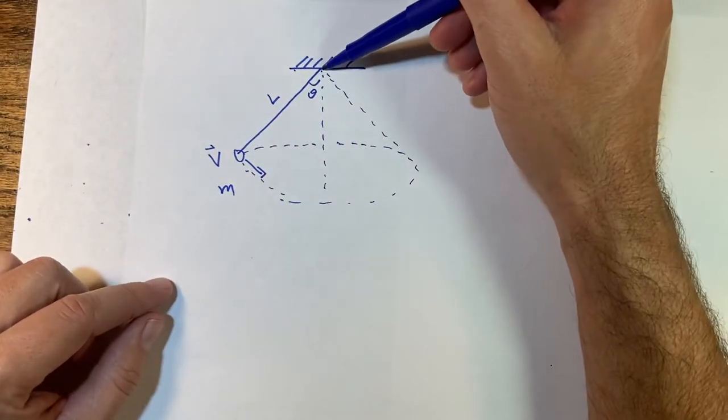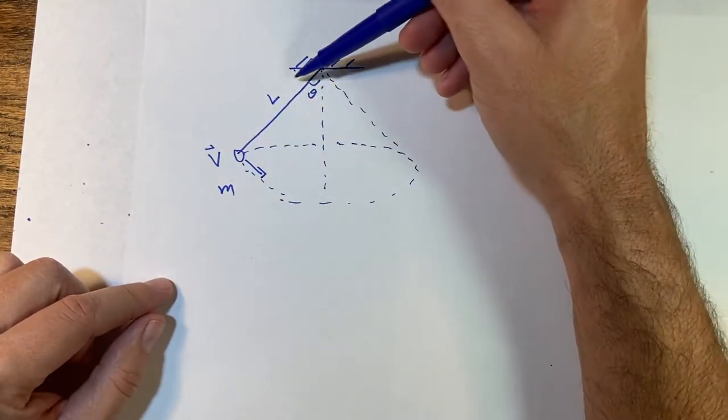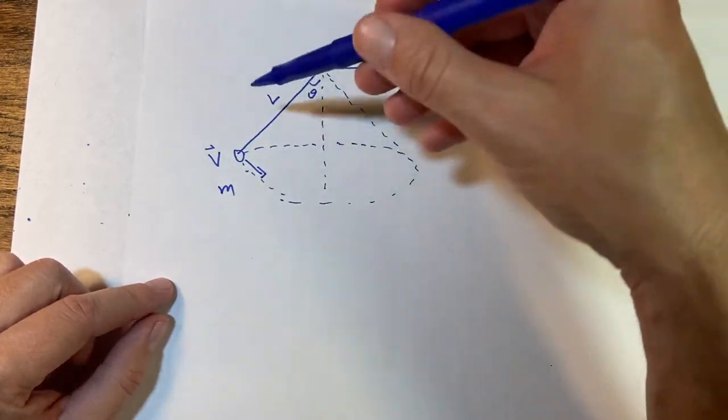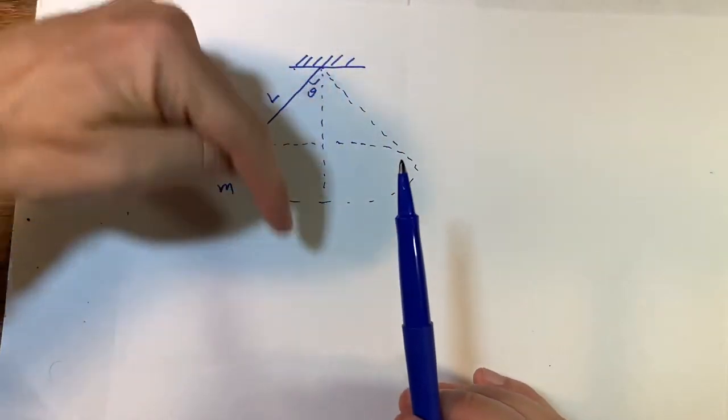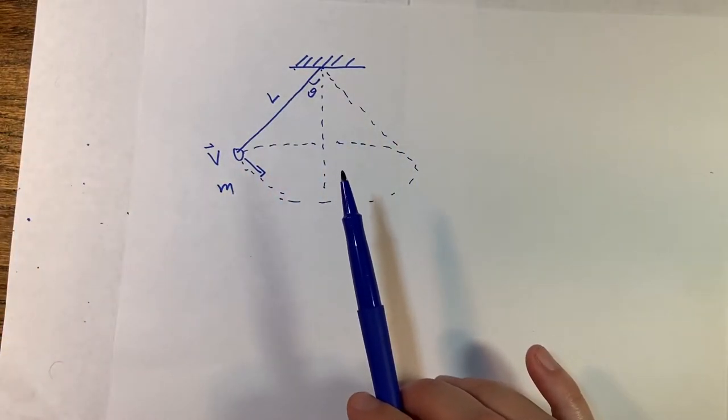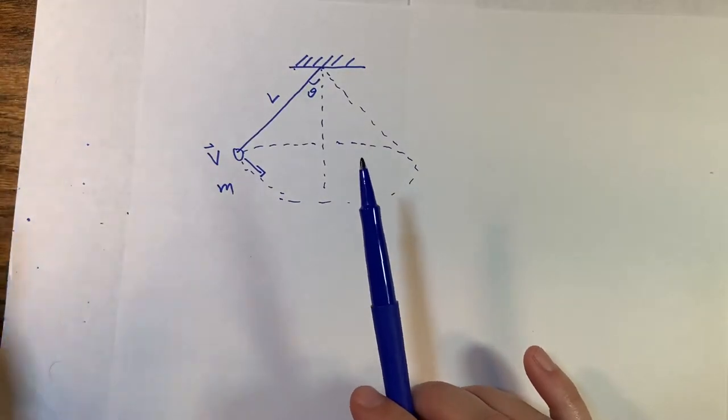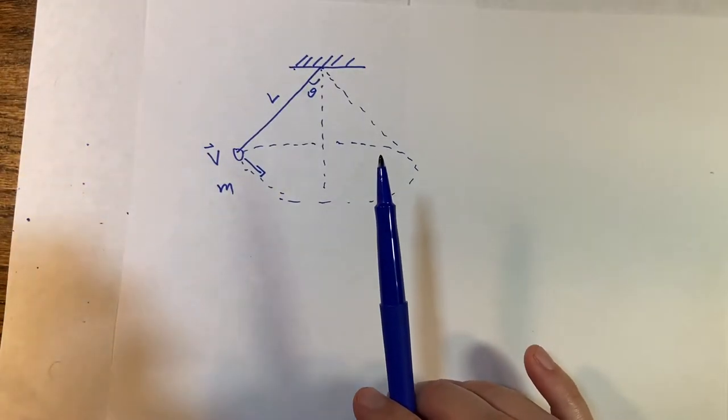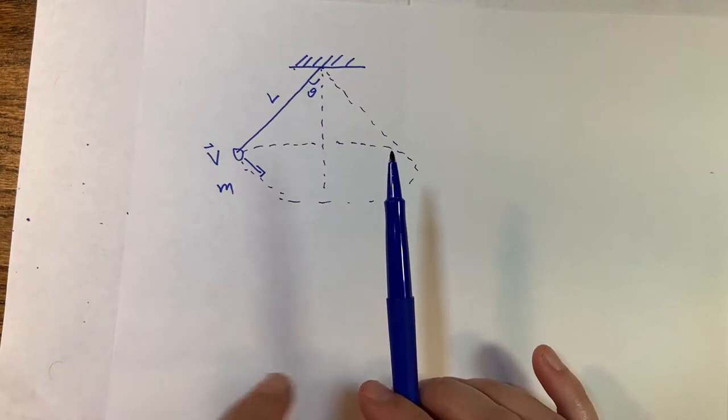So this is a ball mounted to a string and it's swinging around in a horizontal circle. I'll try to draw that here, but this is down and so it's actually going around like that. One of the great examples I've seen in a lot of physics classrooms is a flying pig, so it's a pig with wings hanging on the string and it flies in a circle like this.